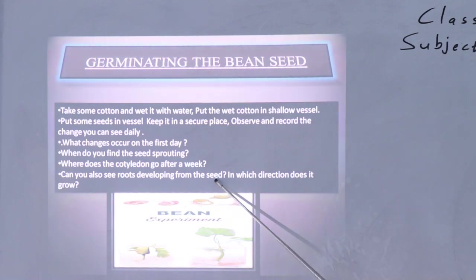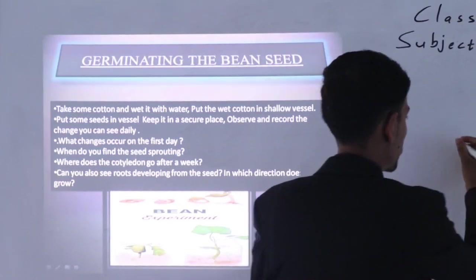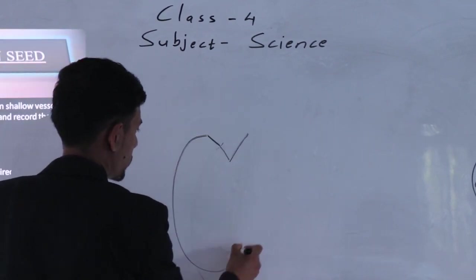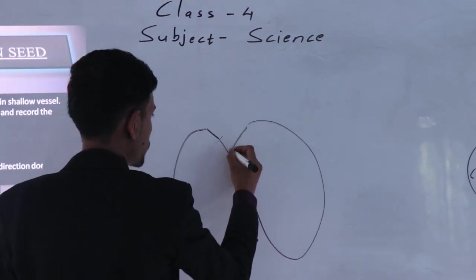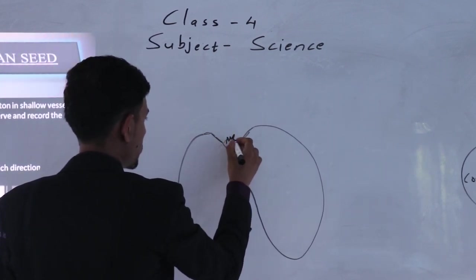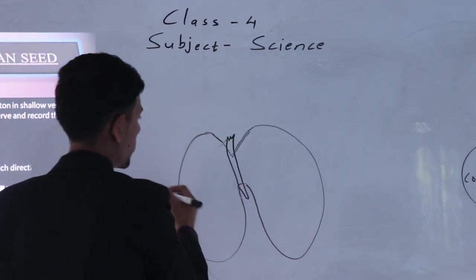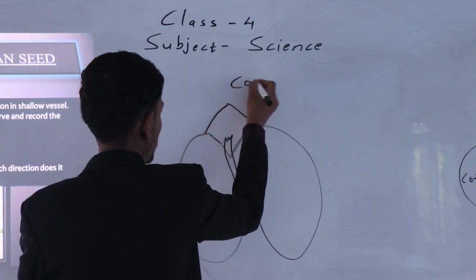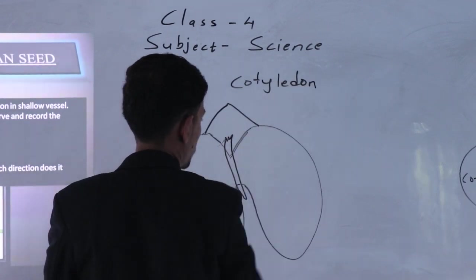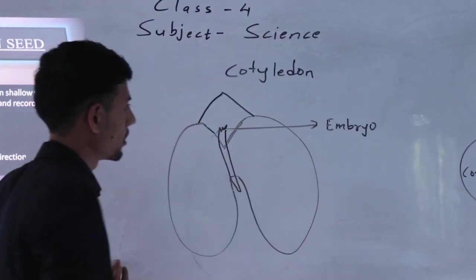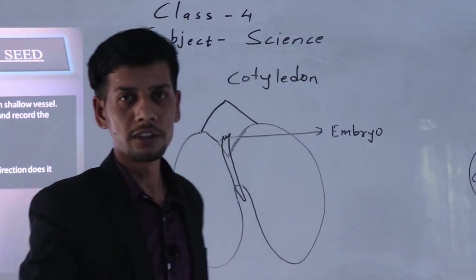Okay, now I am going to show you a figure of cotyledon. You can see here I am going to make a figure - that a seed splits into two parts. There is a seed that splits into two parts, and here is a small baby plant which is called embryo. And these two sides opposite each other, they are called cotyledon. And this small baby plant is embryo. We call this embryo.